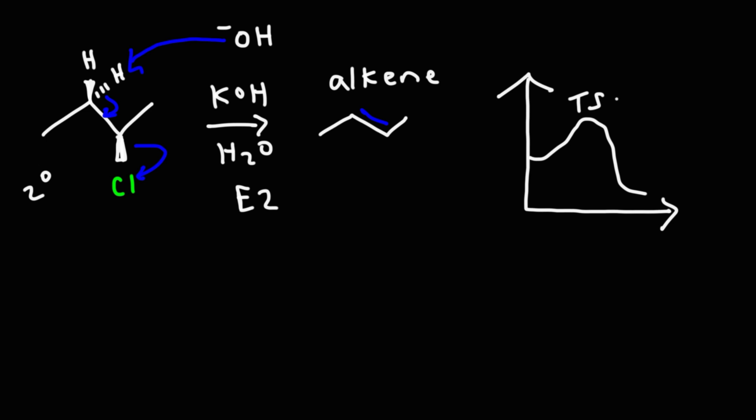We've got potential energy on the y-axis, the reaction coordinate system on the x-axis. So for all concerted reaction mechanisms, they are all one-step reactions. And so you're only going to have one transition state in the potential energy diagram.